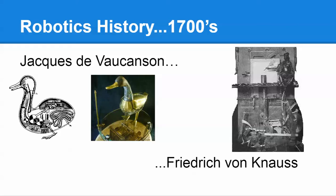Friedrich von Nauss, from Vienna, created a machine capable of writing predetermined sentences with input from the user, or it could function as a typewriter that when keyed manually would output handwritten letters. It was very intricate and well-developed. A reconstruction is shown on screen where it appeared that a statuette was doing the writing, but it was actually the machine below that was not revealed to the onlookers.